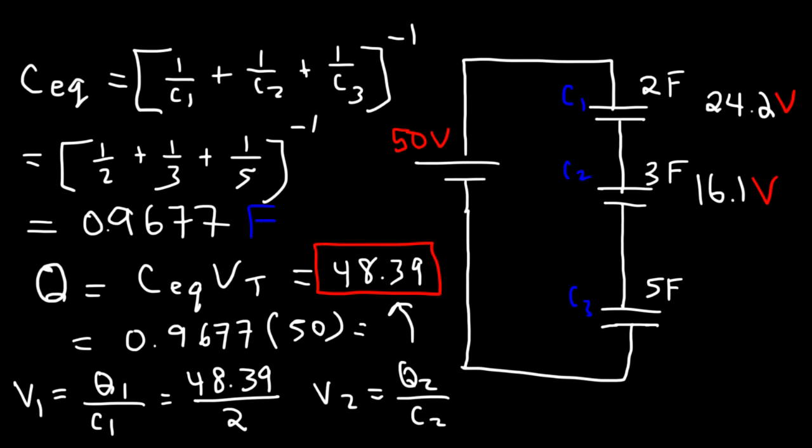Now, to find C3—I mean, to find V3—V3 is going to be Q3 divided by C3. So V3 is going to be 48.39 divided by 5, and that's about 9.7 volts.